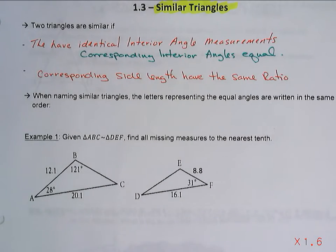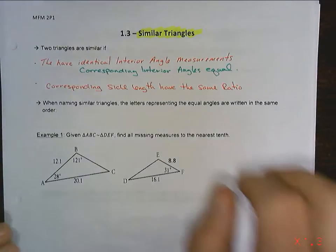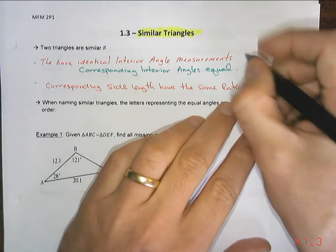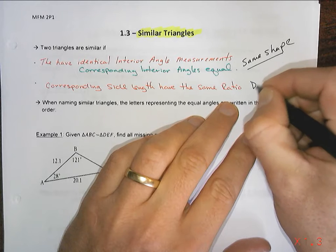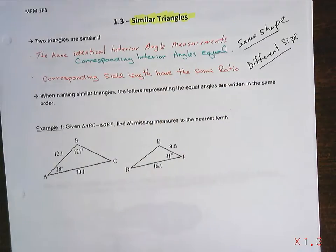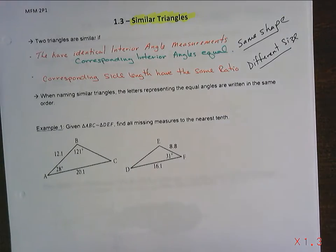That's what it means when we talk about two triangles being similar, and that's a very formal way of talking about it. The informal way: two triangles are similar if they have the same shape but different sizes. Mathematically, that means interior angles are equal and corresponding side lengths have the same proportion.